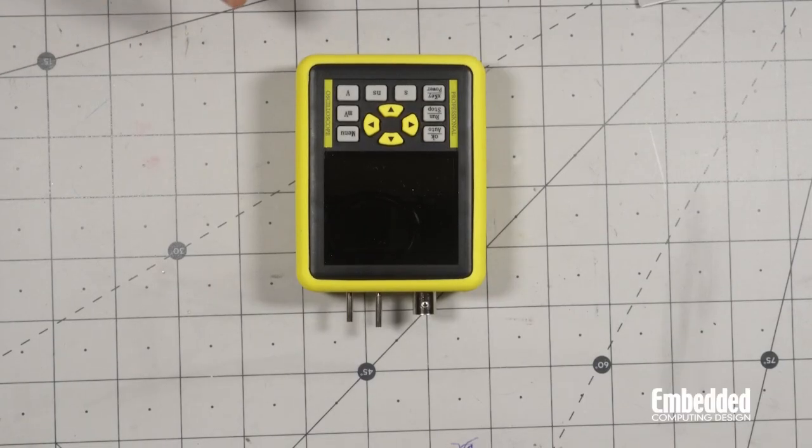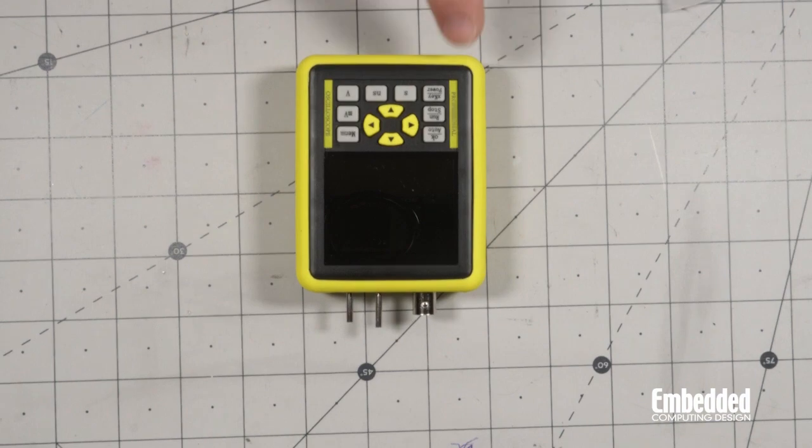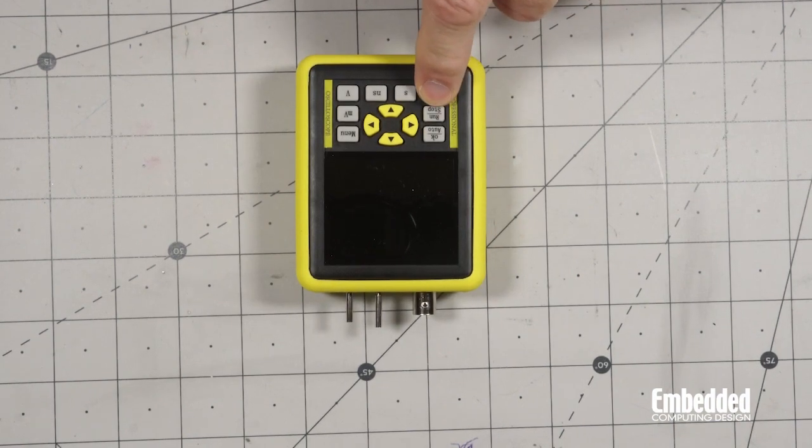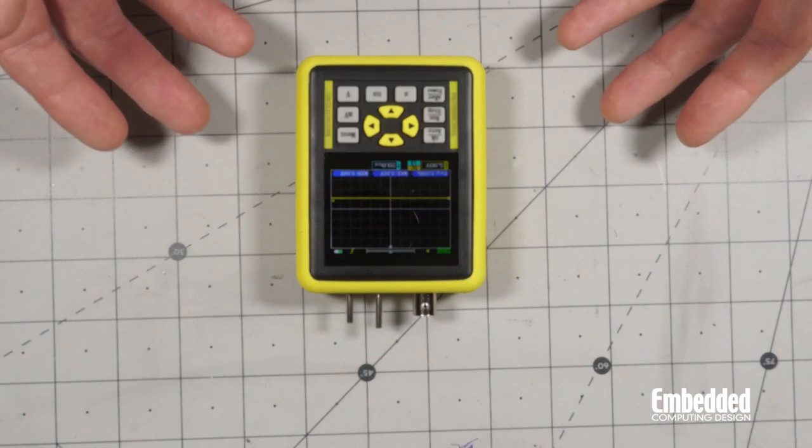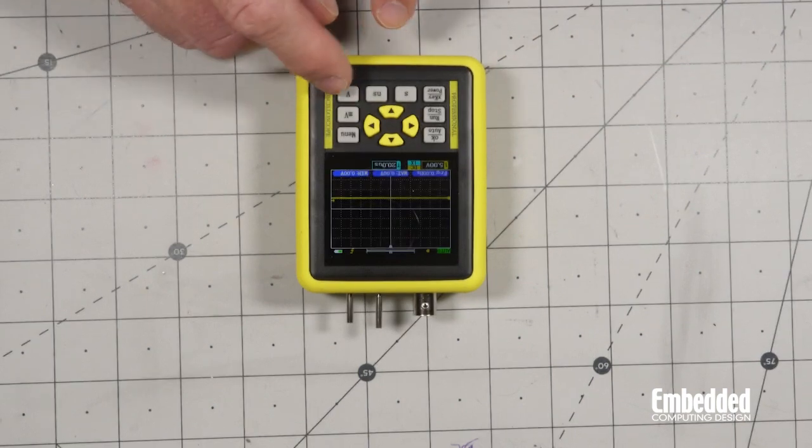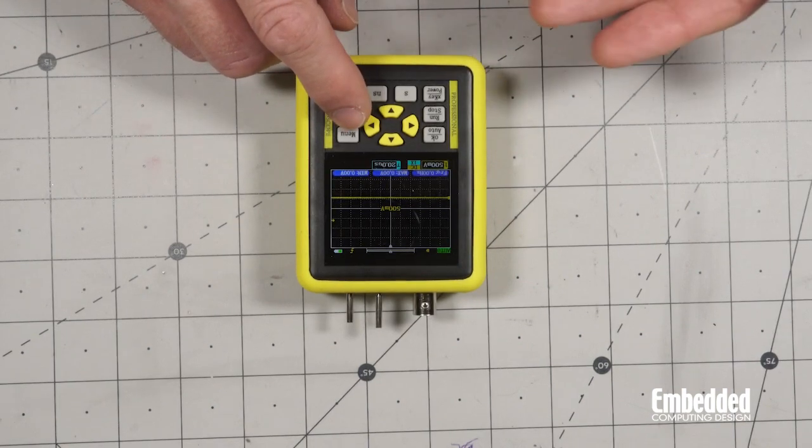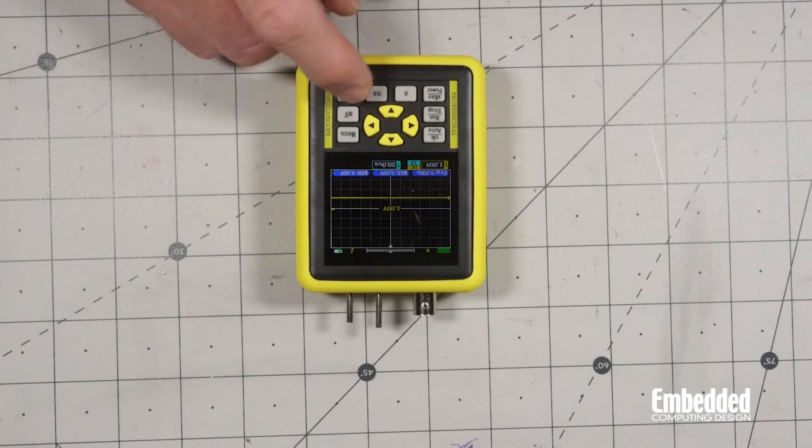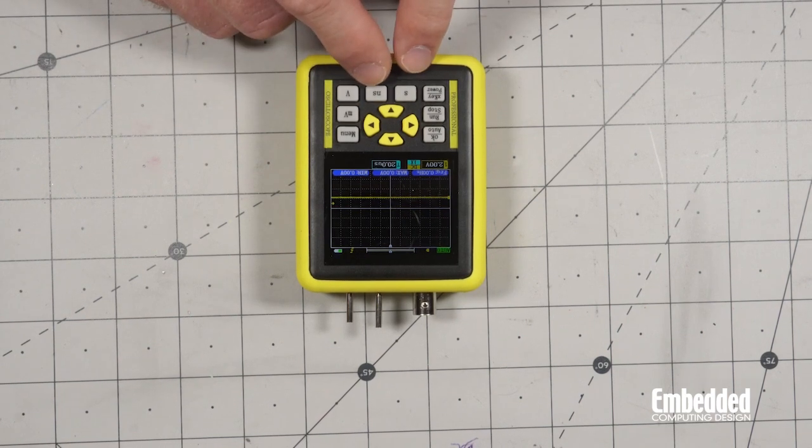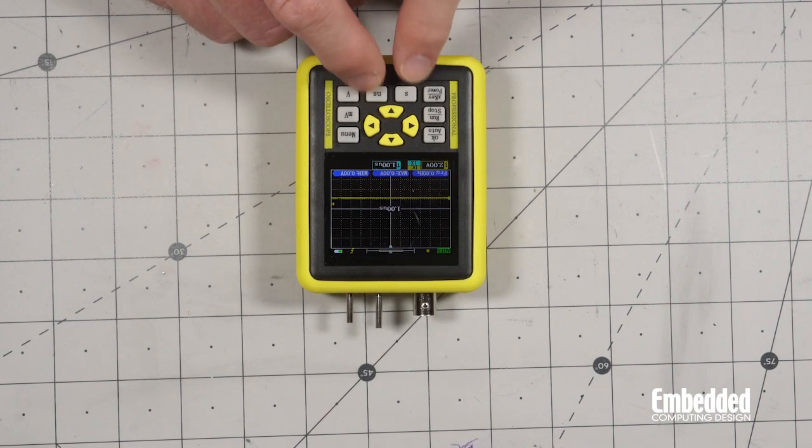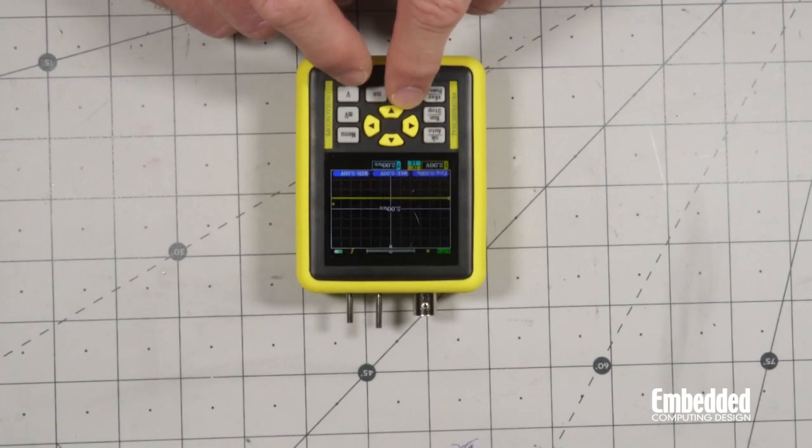So here we have the DSO1511G. We'll go ahead and turn this on with the power key, X key slash power key. And you can see it's nice and colorful and if you need to zoom in, you do the MV on the voltage and then V for out. Same thing with NS and S. That's the time period. So NS goes in, S goes out.